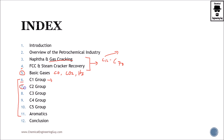Then we continue with the interesting part, which is the C2 group — essentially ethane, but more importantly ethylene, and also acetylene and methanol. All materials that have two carbons will be seen here. The most important is ethylene, which accounts for about sixty percent of the production of petrochemicals.